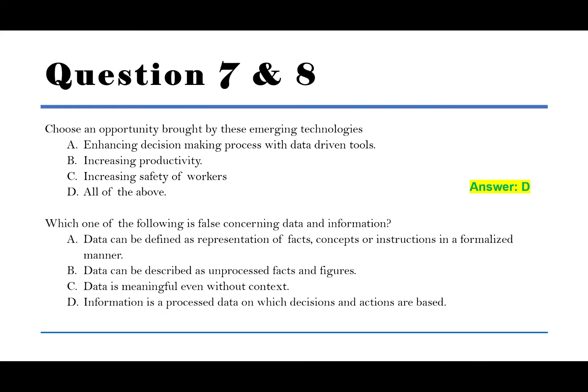Question number 8: Which one of the following is false concerning data and information? A. Data can be defined as presentation of facts, concepts, or instructions in a formalized manner. B. Data can be described as unprocessed facts and figures. C. Data is meaningful even without context. D. Information is processed data on which decisions and actions are based. The answer is C, data is meaningful even without context.